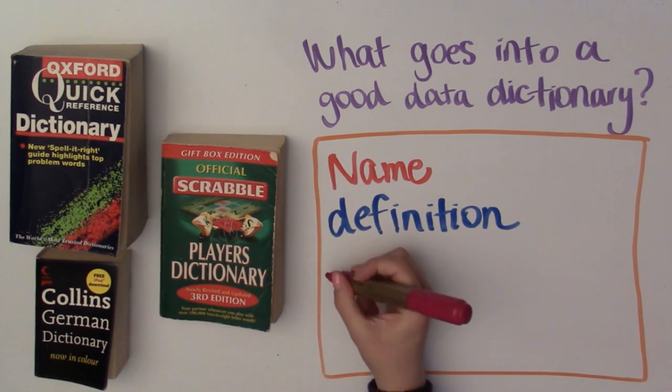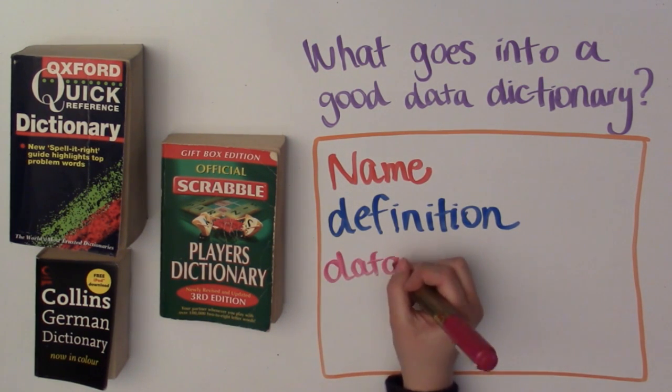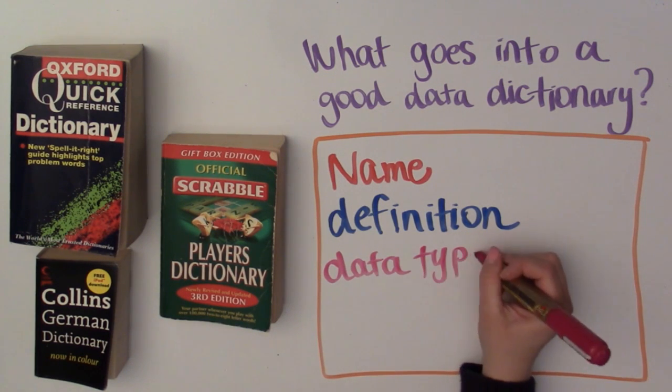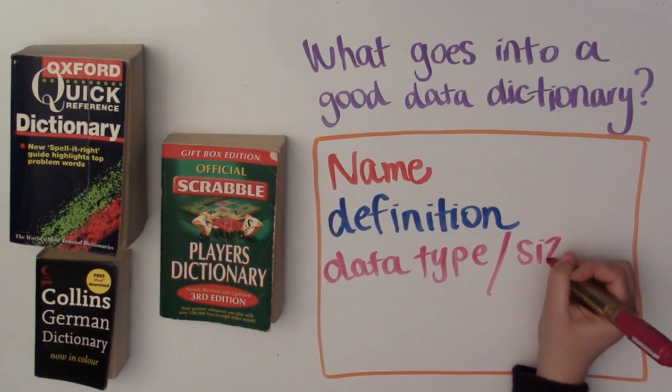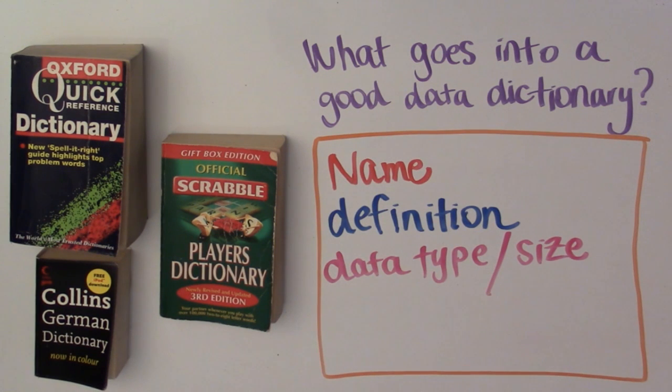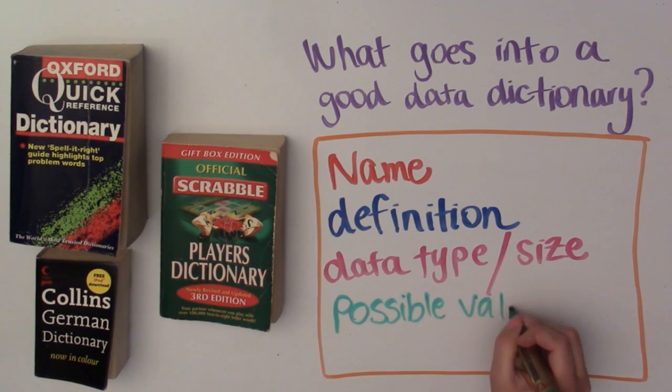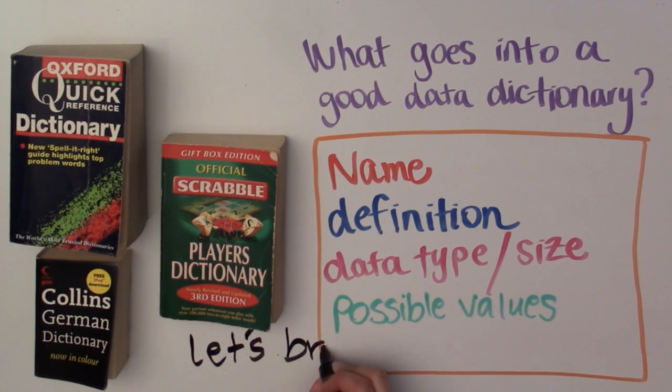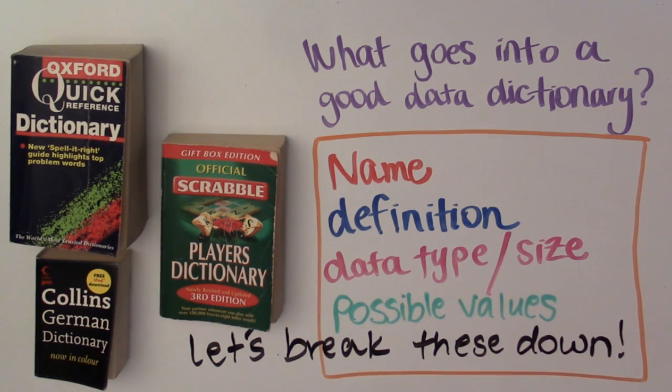Some other common things you might want to record are the data type so we can interpret the information appropriately and also the size so we know how much space it takes up in the database. And maybe a list of possible values if there is a list of codes used in that field. These are the most common things you might see, but there are others that may be more appropriate for your data.